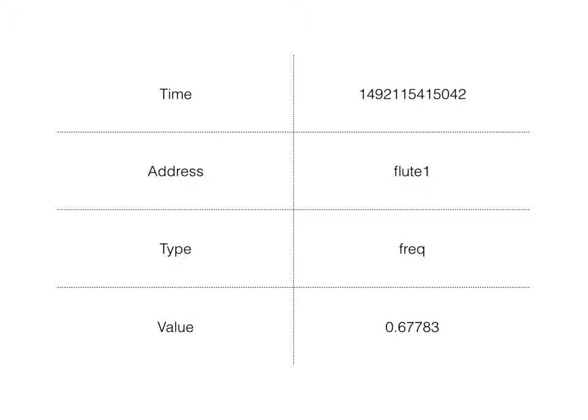There is only one channel in Open Sound Control. However, we can create many events at the same time. Each event has a few properties: the time, an address, a type, and a value.